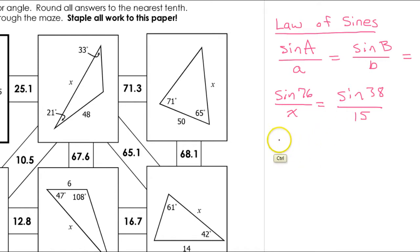So X is our only unknown, so we should be able to easily solve this by cross-multiplying. So X times the sine of 38, okay, looking at this diagonal, should equal 15 times the sine of 76.